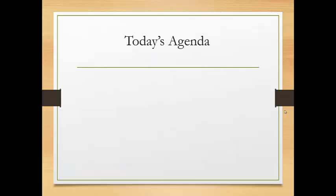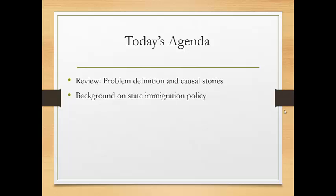Today we're going to be talking about immigration. Here's how it's going to go: we're going to review problem definition and causal stories very briefly, then talk about the background of state immigration policy, watch a couple of brief videos on in-state tuition presenting two different causal stories, and then talk very briefly about the reading and give you some questions to help you begin making connections.